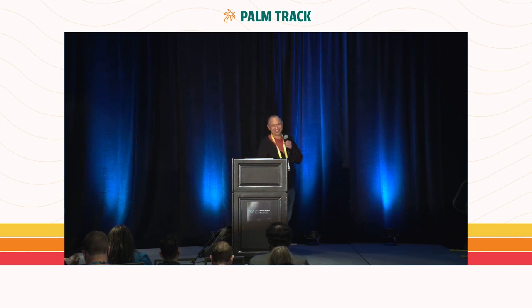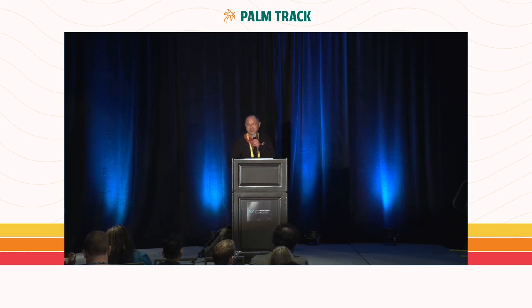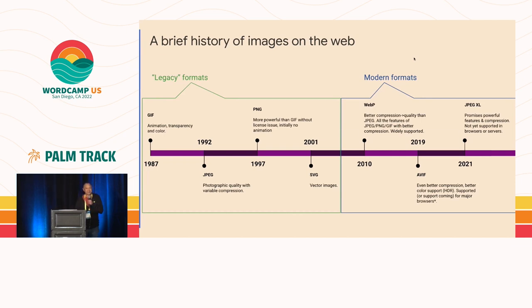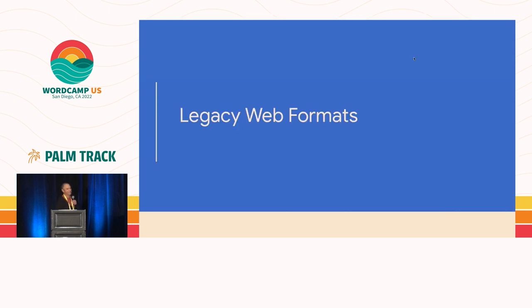Thanks, everyone, for coming. That's a tough act to follow that last talk, so I'm going to do my best to be entertaining. We're going to do a brief history of images on the web. We're going to look at legacy formats like GIF, JPEG, PNG, and SVG, and then move on to modern formats like WebP — which we're landing support for in WordPress 6.1 — and then AVIF and JPEG-XL, which have some very promising characteristics.